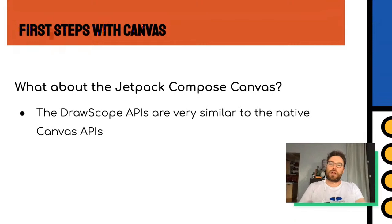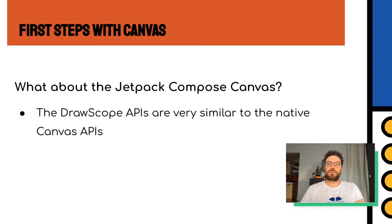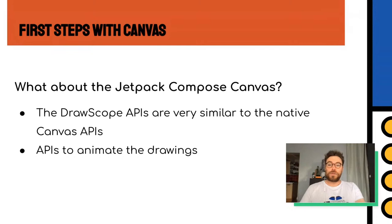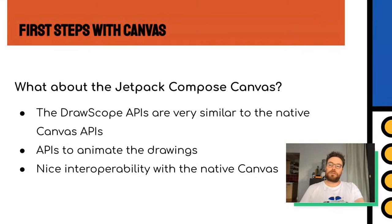Now let's dig into the Jetpack Compose Canvas. You'll have the DrawScope available when you set up the Jetpack canvas. All the APIs it provides are very similar to the native canvas, so you won't be lost if you already know some stuff. It also provides a very nice API to animate your drawings — to apply lots of transformations. And there is nice interoperability with the native canvas — within the composable you can access the native Android canvas to do a bit more.